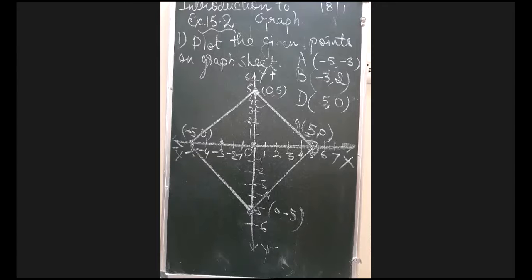Chalo ye bhi ho gaya. Ab aap mujhe batayye point of coordinates of point M. Coordinates of point M. Please listen to me carefully, I'm talking about M point, M, M for monkey. Very good, correct, it's 10 comma 8, it's 10 comma 8 correct. Because x axis pe value di huye 10, y axis pe value di huye 8, isliye iska answer hoga 10 comma 8.